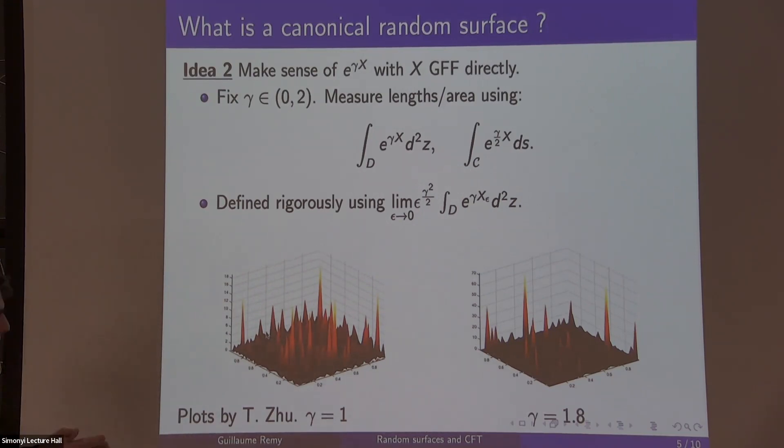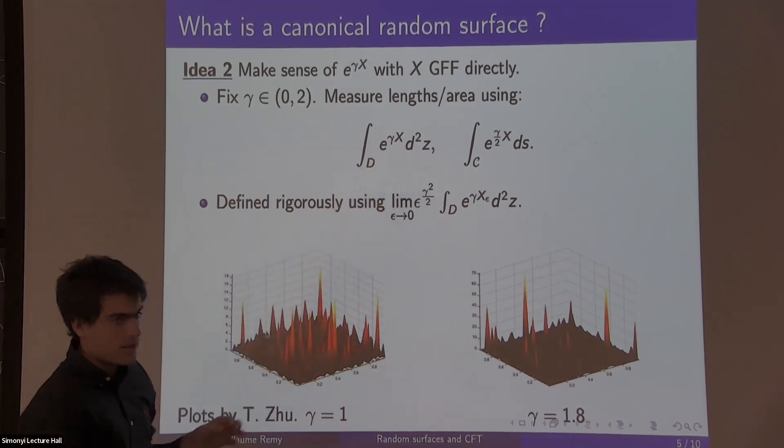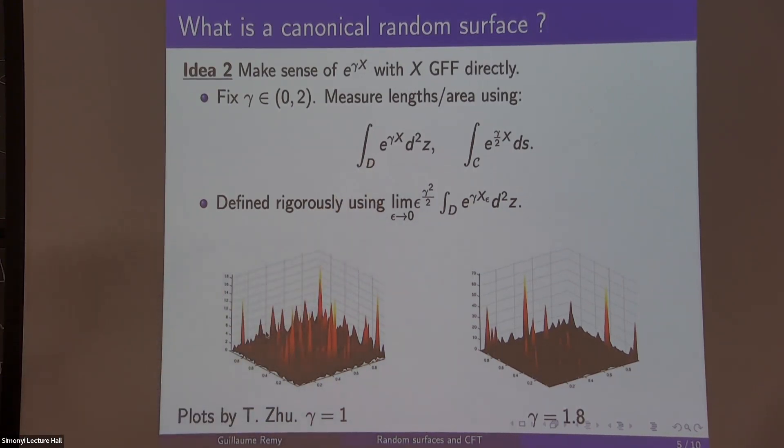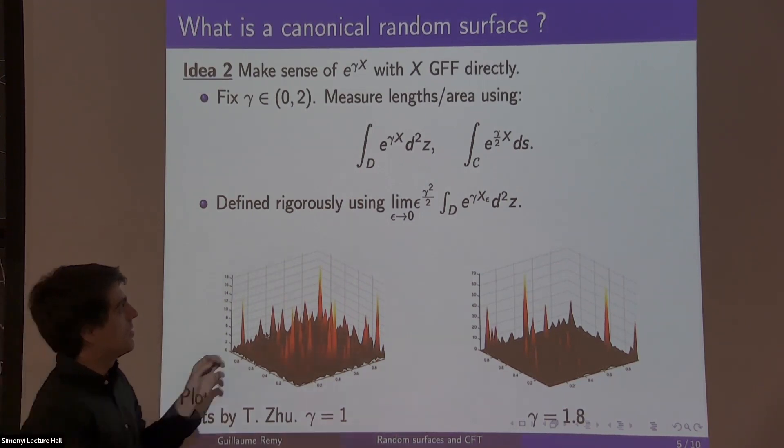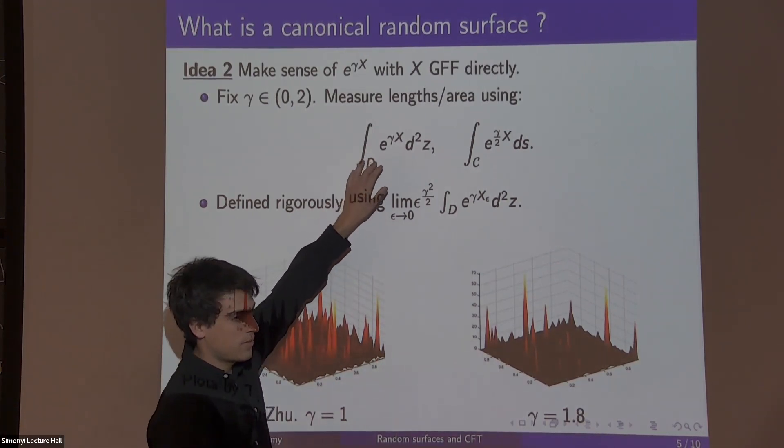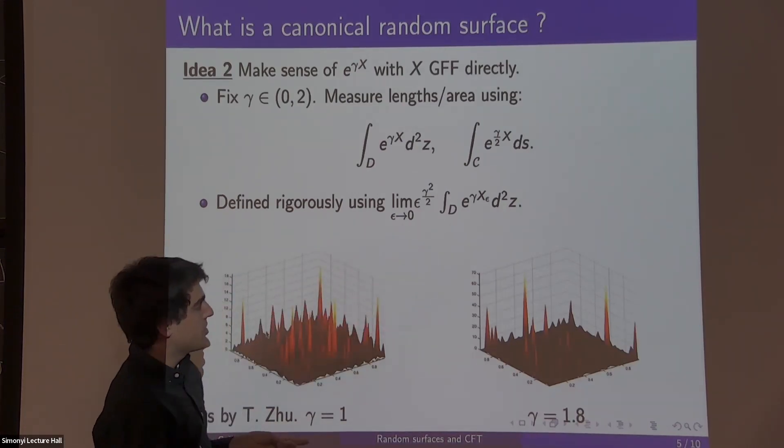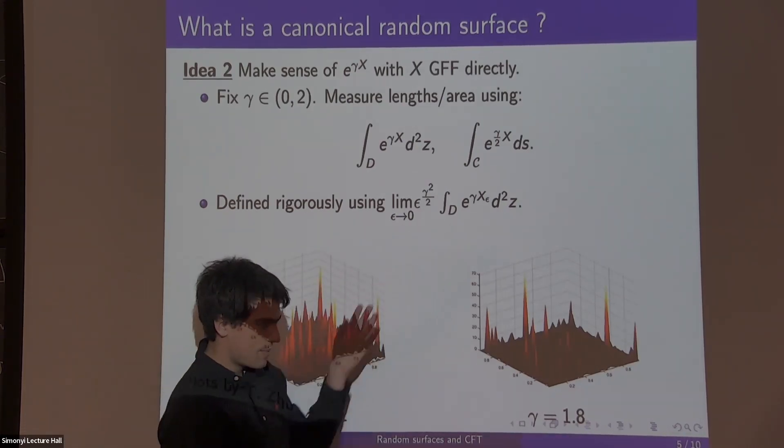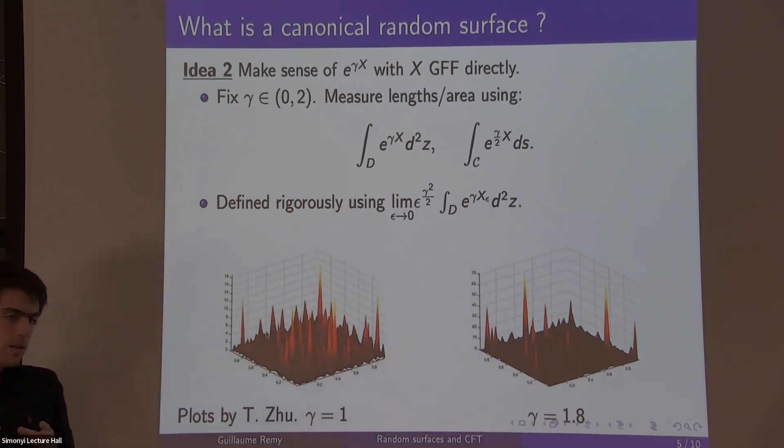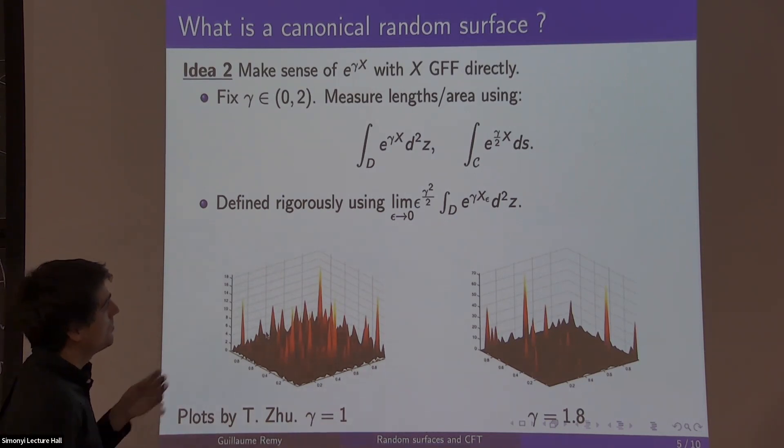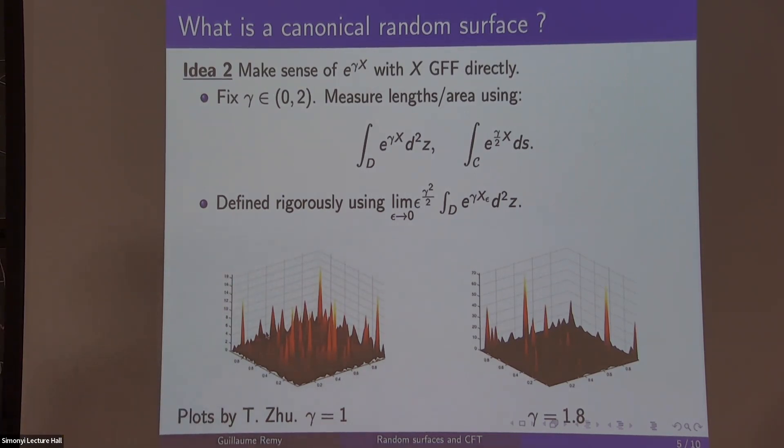Since X is the random Gaussian free field, it assigns random area to D. Same with a curve, you can measure its length this way. When gamma is bigger than 2, these become too irregular. There's a phase transition at gamma equals 2.